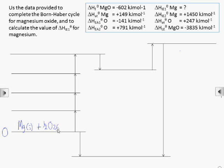So we need one mole of magnesium atoms and half a mole of oxygen molecules. We'll measure all the energy changes from here, so we'll label this energy level as zero.